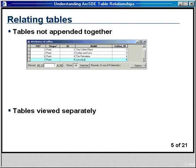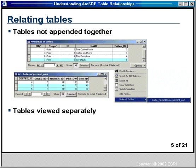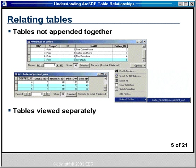The second type of relationship in ArcMap is a relate. When you relate tables together, a relationship is established but the columns are not appended — your tables are viewed separately. For example, a coffee feature class and a percent owner attribute table with a common coffee ID column can be related. You can make selections from the coffee table and view related records in the percent own table by going to Options, Related Tables, and selecting the relate you created.